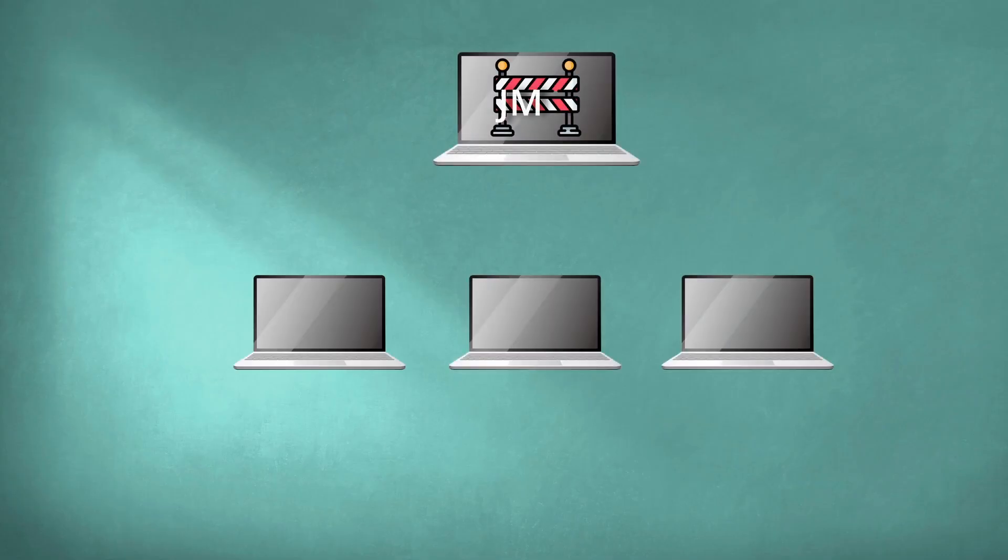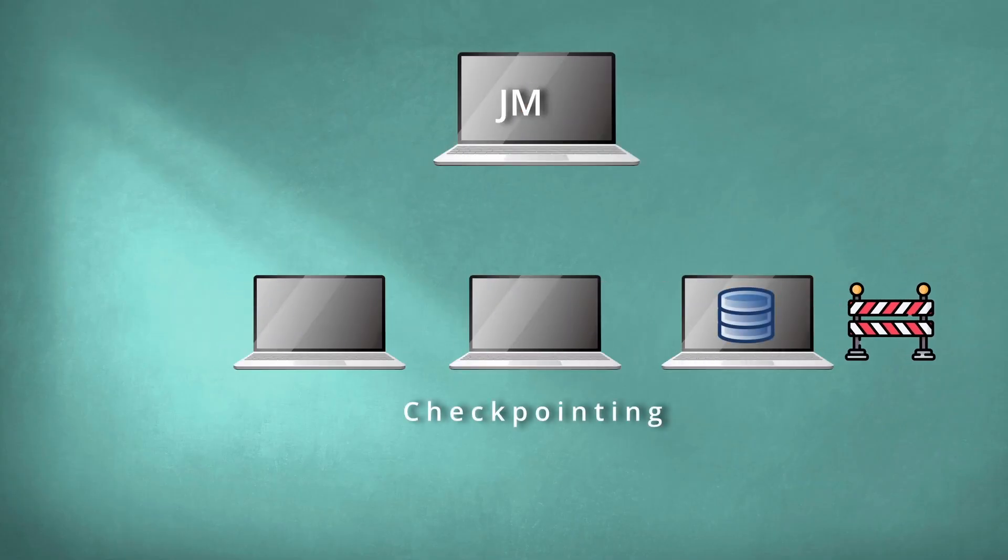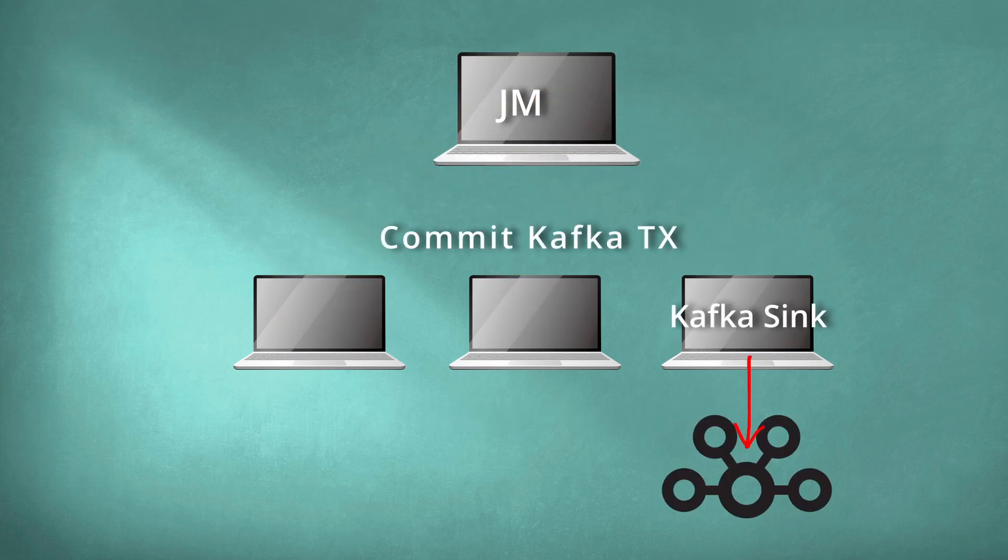The next step is to notify all operators that the checkpoint finished successfully — this can be considered the second phase of 2PC. The job manager emits checkpoint-completed callbacks for each operator. In our application, both the Kafka source and the intermediate operator do not manage any external state, and therefore don't need to take any actions during the second phase. In contrast, the Kafka sink manages external state and should commit the Kafka transaction during the second phase.